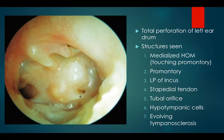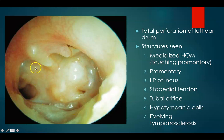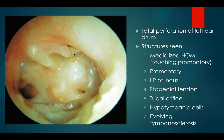Here you have a total perforation of the left eardrum. You can very clearly see the tubal orifice, hypotympanic cells, and promontory. This is your medialized handle of malleus, almost touching the promontory. Here you have your long process of incus, stapedial tendon, and the stapes superstructure. You can also make out some evolving tympanosclerosis — these whitish tags are evolving tympanosclerosis.